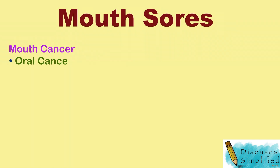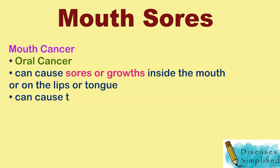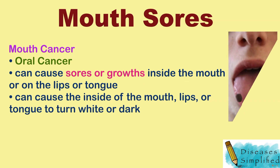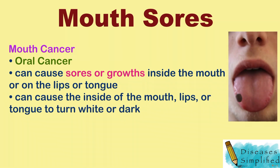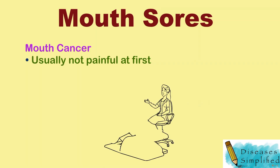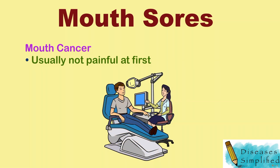Mouth cancer, or oral cancer, can cause sores or growths inside the mouth or on the lips or tongue. It can also cause the inside of the mouth, lips, or tongue to turn white or dark. Usually these symptoms are not painful at first. Some people find out they have mouth cancer only after a routine medical or dental exam.